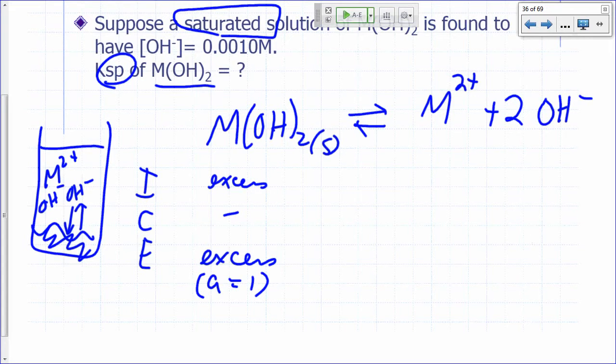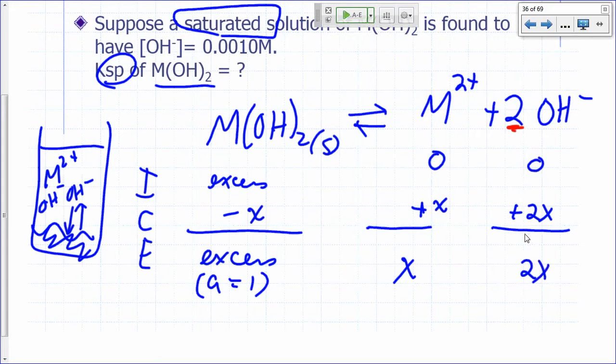But if you lose X moles of this, how much M²⁺ would you get? You get plus X moles per liter. And you start with no hydroxide. Again, we're assuming there is none, although there is some. It would be negligible. How much hydroxide would you make? It's going to be 2X, right? So plus 2X. So at equilibrium, you have X moles per liter of M²⁺, 2X moles per liter of hydroxide.